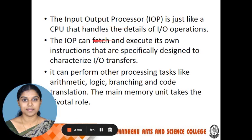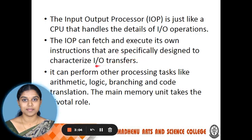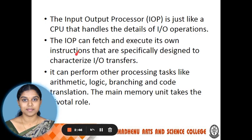The input-output processor handles IO operations just like a CPU. The IO operations are handled by the IOP so that the CPU does not need to be involved. The CPU gives instructions to the IOP, and the IOP can fetch and execute its own instructions specifically designed for IO transformations. These instructions help with data transfer between IO devices and memory. The IOP can also perform tasks such as arithmetic logic, branching, and code translation.